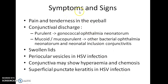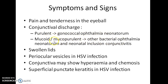What are the symptoms and signs of Ophthalmia Neonatorum? There will be pain and tenderness in the eyeball. There will be conjunctival discharge. The conjunctival discharge will be purulent in case of gonococcal Ophthalmia Neonatorum. It will be mucoid or mucopurulent in case of other bacterial Ophthalmia Neonatorum and Neonatal Inclusion Conjunctivitis.